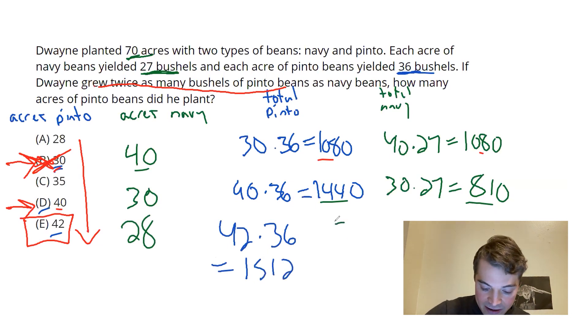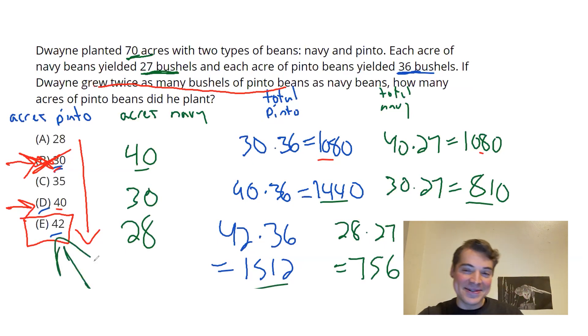And for navy, you would have 28 times 27. And that would be 756. And voila, right? 1512 is double 756. So you know, the correct answer is E.